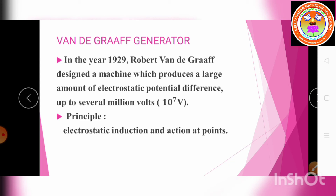The Van de Graaff generator was designed by Robert Van de Graaff in 1929. It produces a large amount of electrostatic potential difference up to 10⁷ volts, that is several million volts. It works on the principles of electrostatic induction and action at points.